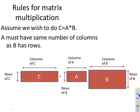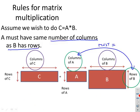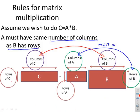Rules for matrix multiplication: to compute C = A × B, A must have the same number of columns as B has rows. These two dimensions must be equal, otherwise the matrix multiplication is not defined — that's the only requirement. The number of columns in the result matches the number of columns of B, and the number of rows in the result matches the number of rows in A. So the rows come from the left-hand matrix and the columns come from the right-hand matrix.